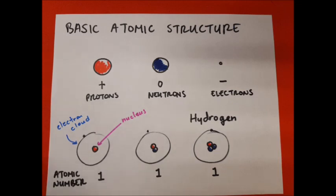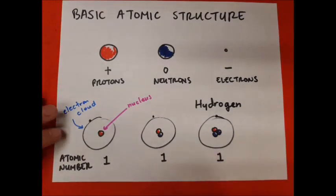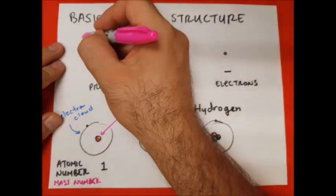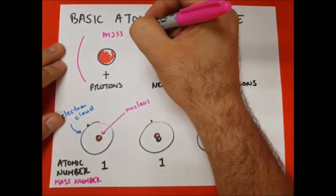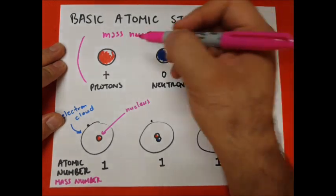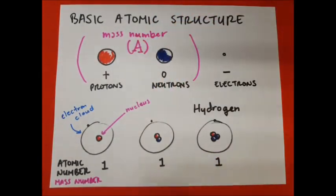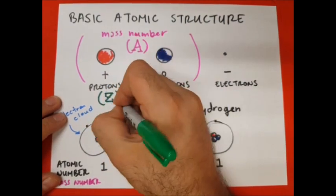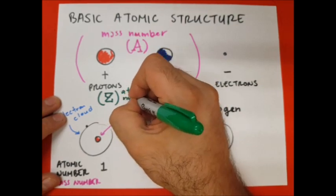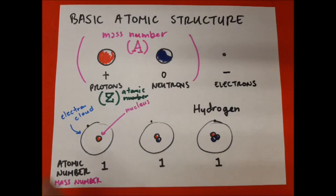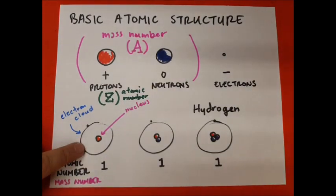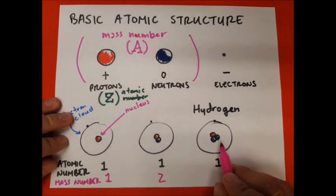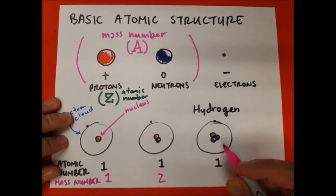We also have another concept: mass number. Mass number is the addition of protons and neutrons. In a textbook, mass number is usually represented by the capital letter A, and the number of protons, or atomic number, is characterized by the letter Z. So the mass number for the first illustration is 1; for the second, 1 proton plus 1 neutron equals 2; and for the last drawing, 1 plus 1 plus 1 equals 3.